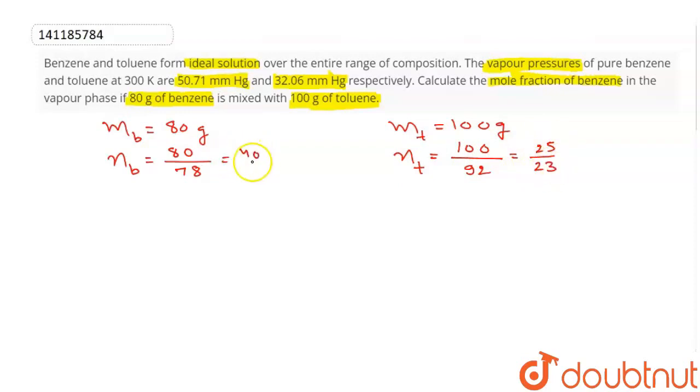25 over 23, it gives you 40 over 39. The moles of benzene equal to 1.025 approximately and moles of toluene are 1.09 approximately.